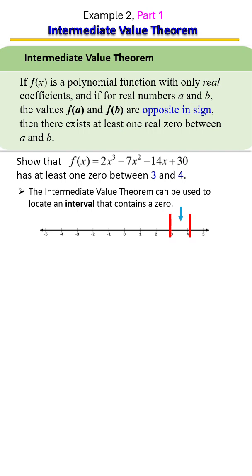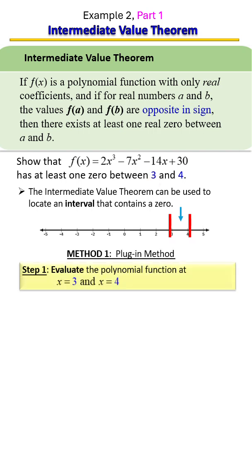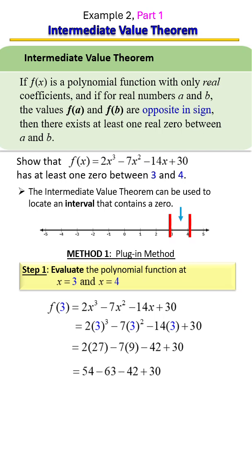So what that means is you're going to take one of your values, and I'm going to take three first. We're going to remove all the x's from the original function and replace it with a three and do the math. So I'm going to go ahead and do the math here. To save time, I'm going to click through it. And we have an output of negative 21.